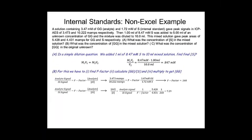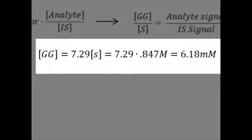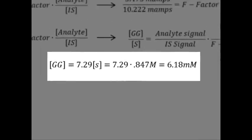And we get a number of ratio of 7.29. Now, luckily for us, back up here in part A, we calculated the concentration of S in this solution. So it's a relatively easy thing, then, to calculate the concentration of the analyte. Here it is.